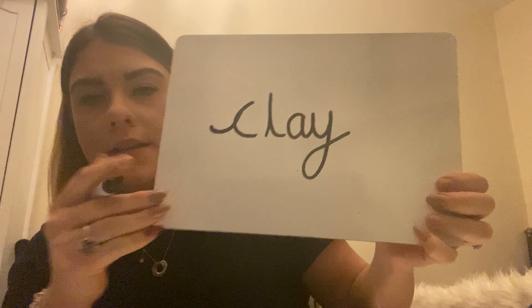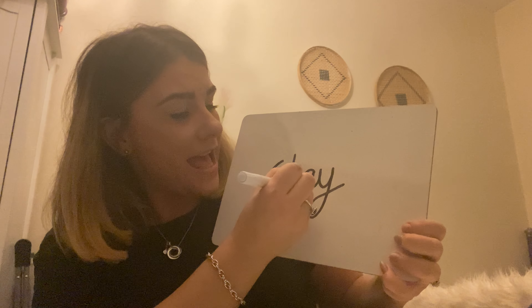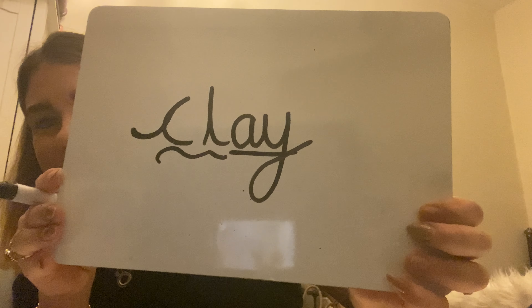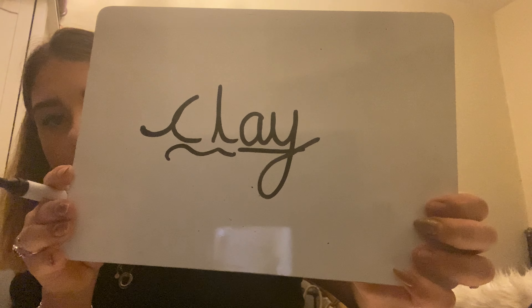Our next word is C-L-AY. We've got another blend at the start: C-L-AY — clay. Have a go at writing 'clay' on your whiteboard. So far we should have 'play' and 'clay'. What do you notice about those words? Tell your grown-up.